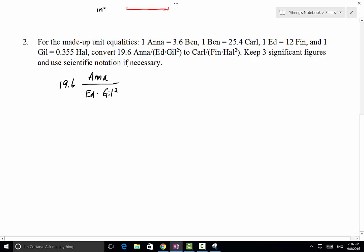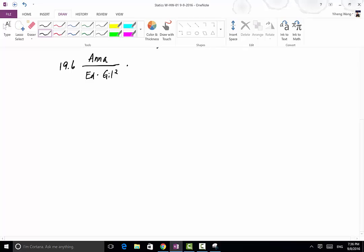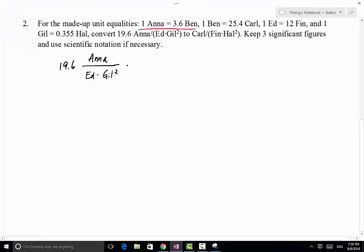Because we want to cancel out Anna, therefore from this first equality we're going to write our conversion coefficient to be 3.6 Ben over 1 Anna. The reason we do this is because now Anna is on the denominator, therefore we can cancel this with this Anna right here on the numerator.